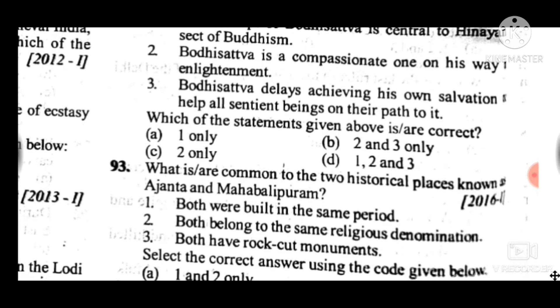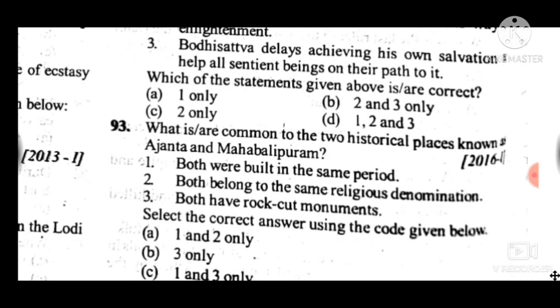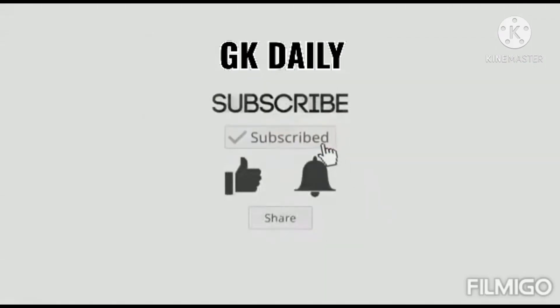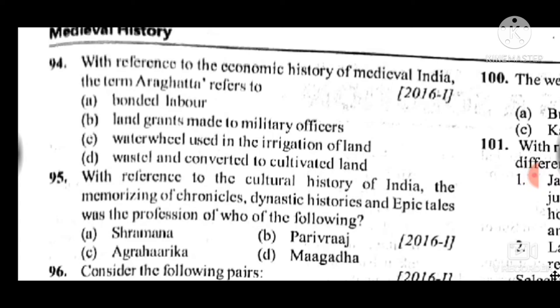Question 93: What is common to the two historical places Ajanta and Mahabalipuram? Answer to question 93 is B: option 3 only — both are rock-cut monuments. This is the correct option. Question 94: With reference to the economic history of medieval India, the term Araghatta refers to — answer to question 94 is C: a waterwheel used in the irrigation of land.